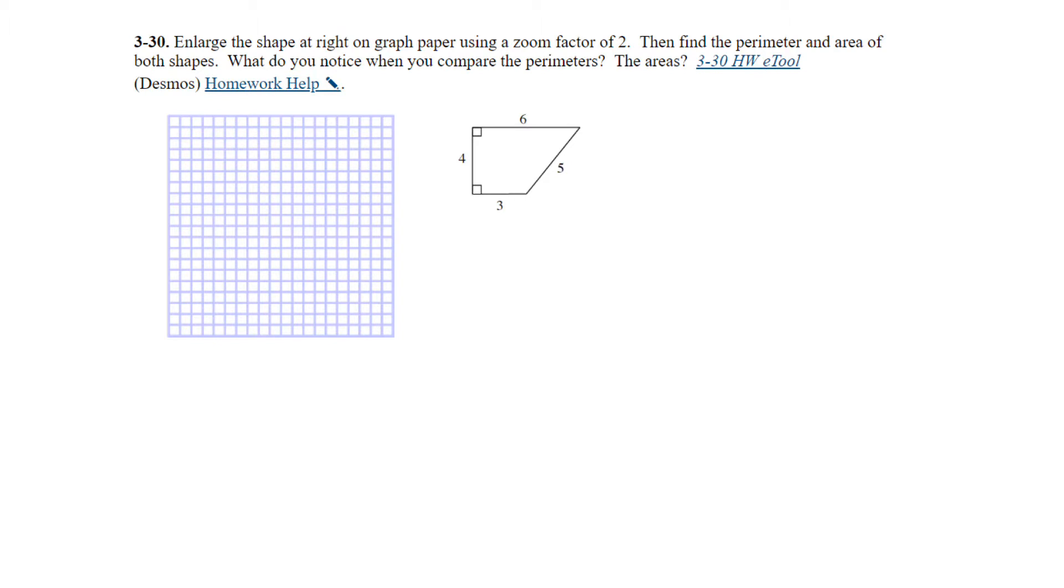Question 30. Enlarge the shape at the right on the graph paper using a zoom factor of 2. Then find the perimeter and area of both shapes. What do you notice when you compare the perimeters, and what do you notice when you compare the areas? Let's find the perimeter and the area of the original. If we add up all the sides, 6 plus 5 plus 4 plus 3, that's 18 units. The area, we can use the formula for a trapezoid. This would be 1/2 times the height, which is 4, and then base 1 plus base 2. Half of 4 is 2, 2 times 9 is 18. The perimeter is 18 units, and the area is 18 units squared.